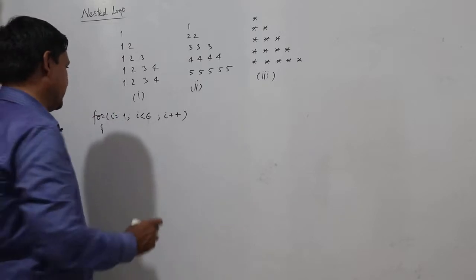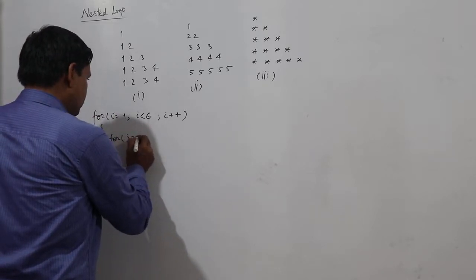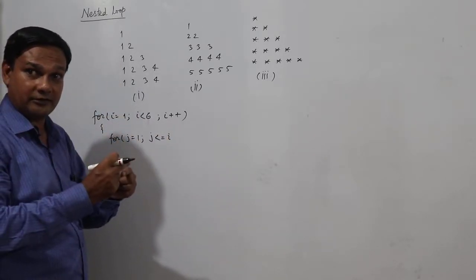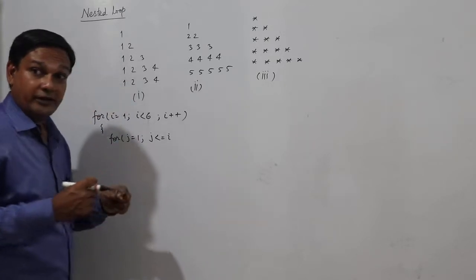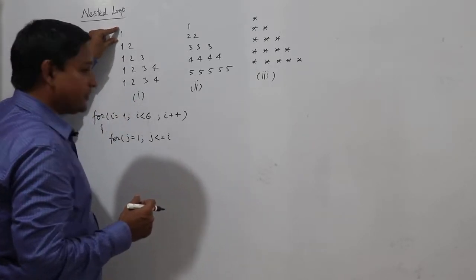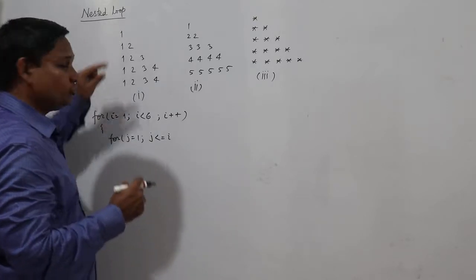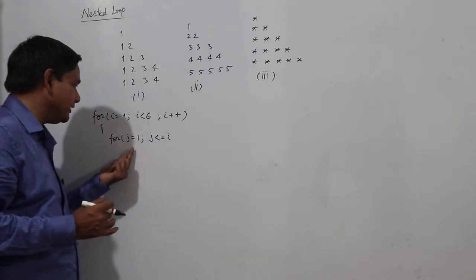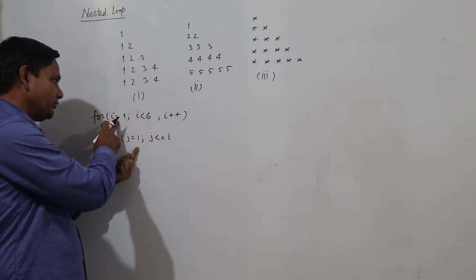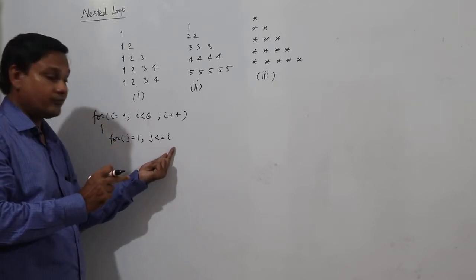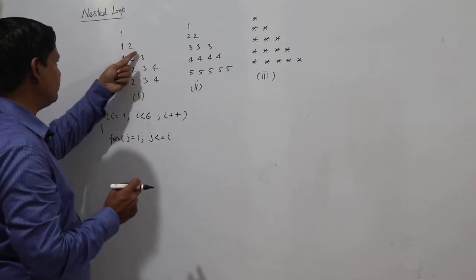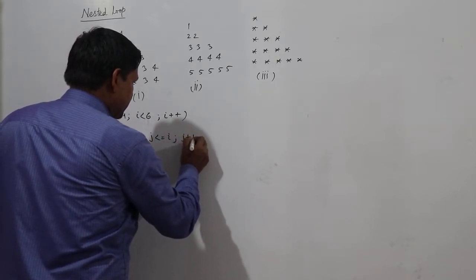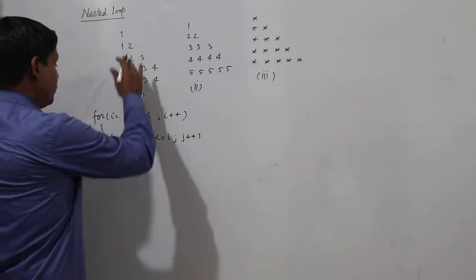For j equal to one, j less than equal to i — as many as the number of rows. I'm not using the number of rows directly. If this is the first row, only one column is there. Second row, only two columns. Third row, only three columns. So the number of columns depends on i. I've written j equal to one because the loop starts from one. j less than equal to i: one less than equal to one, two less than equal to two, three less than equal to three — that will be the limit. j plus plus.